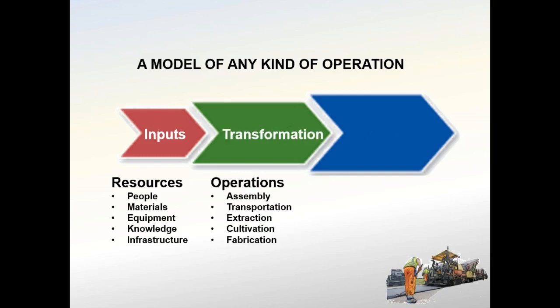Moving on from the inputs to the actual transformation: manufacturing, healthcare, agriculture, and education will experience transformation in areas such as assembly, transportation, extraction, cultivation, and fabrication. This transformation sector clearly represents the operation itself. Whereas the inputs and outputs of any given operation are identifiable entities such as people, knowledge, and goods, the associated operation consists of processes or actions taken to create the outputs. Thus, operations management is the planning and facilitating of those actions.